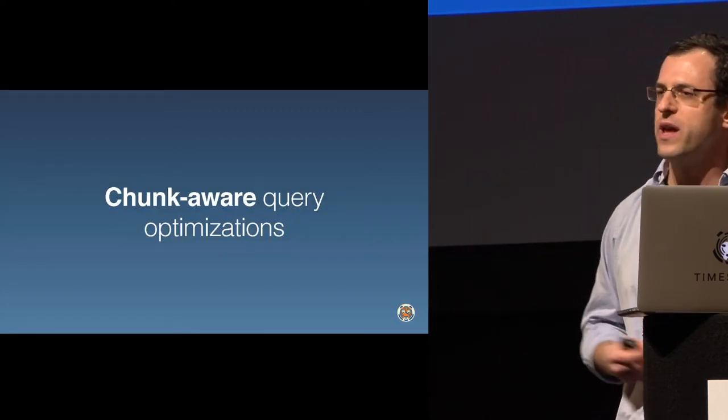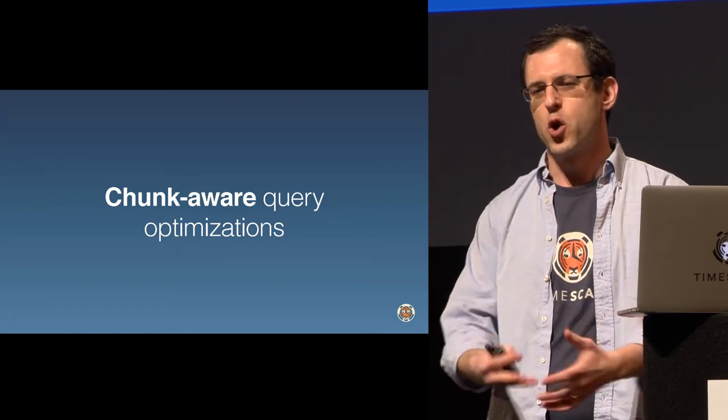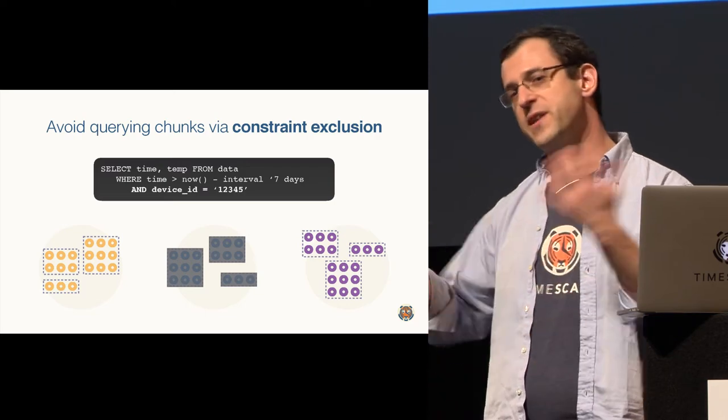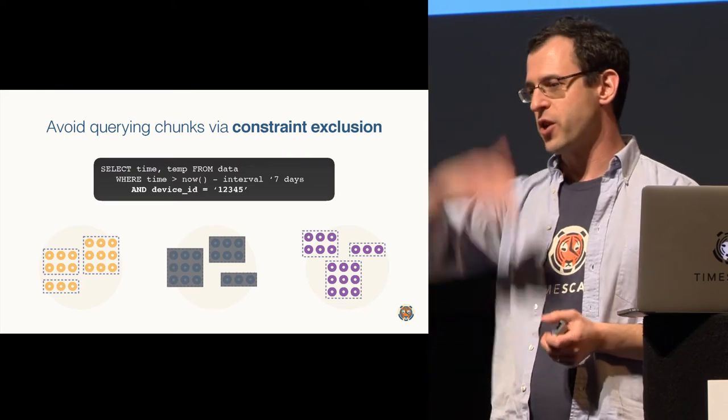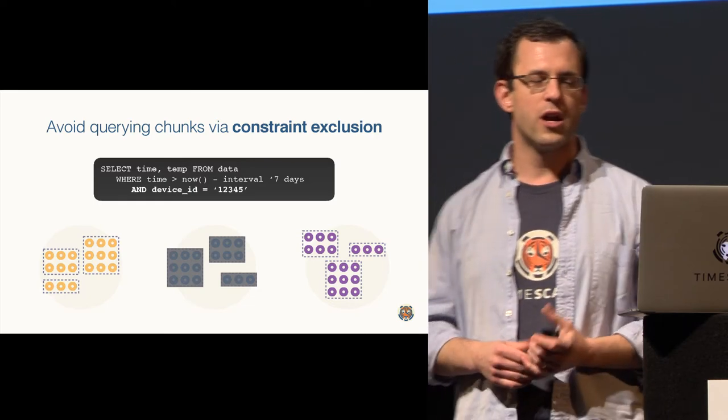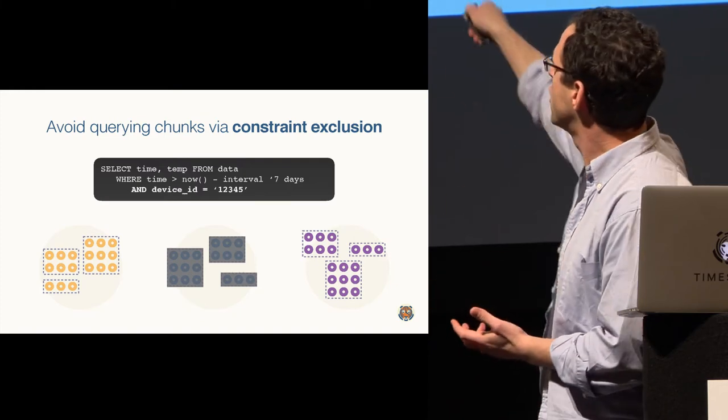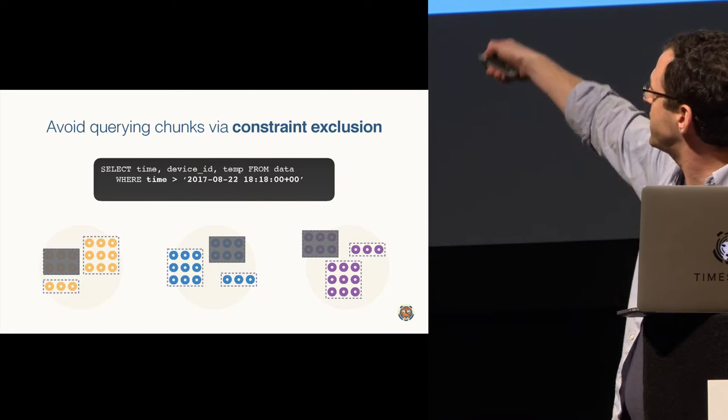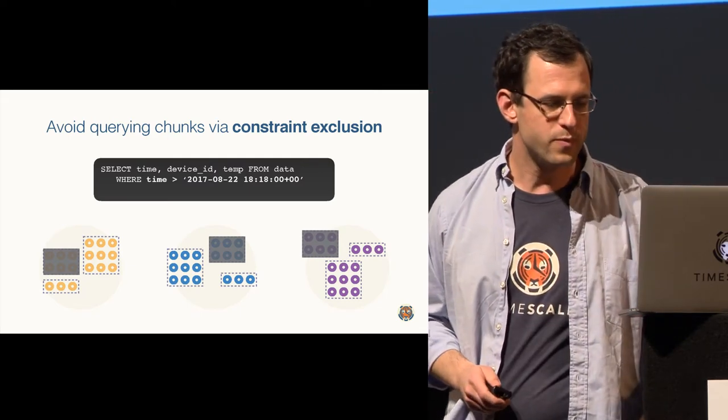The other thing this allows us to do is not just maintain high insert rate, but also leads to various chunk-aware query optimizations, particularly where we have semantic knowledge of time, which a normal database doesn't think about. One thing this allows us to do is very aggressive constraint exclusion. For example, given these large numbers of chunks - you have 50,000 chunks - naively, when you query the parent, it's going to run the same query against all the children. That's okay if you have 10 children. It's very different if you have 50,000 children.